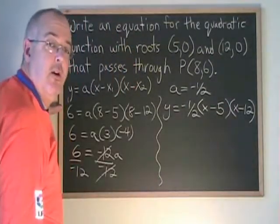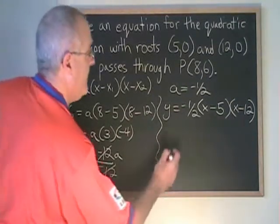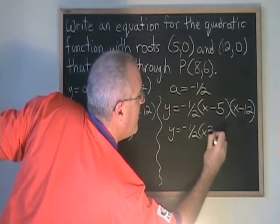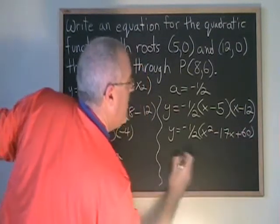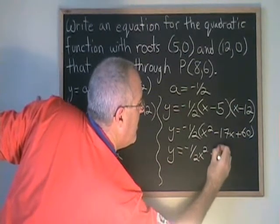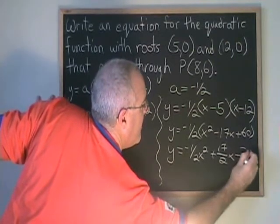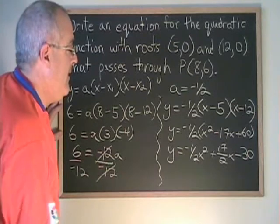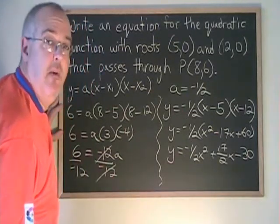And if we simplify, we can turn this into either standard form or the ABC form. So our final equation in ABC form is y equals negative 1/2 x squared plus 17/2 x minus 30.